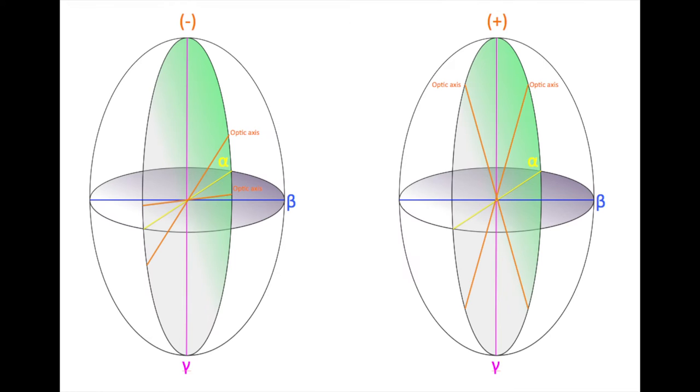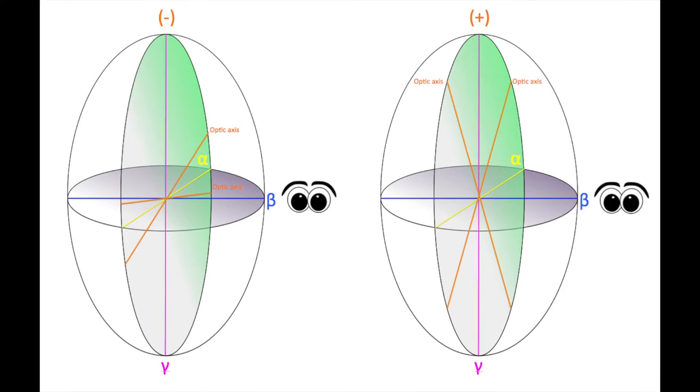When we are looking at a grain in the microscope, we are looking at a slice of the ellipsoid. For biaxial minerals, finding a flash figure lets us know that we are looking at a slice that looks down at an alpha-gamma section. This is the green ellipse in the figure. Alpha will always be the fastest ray, and gamma will always be the slowest ray.